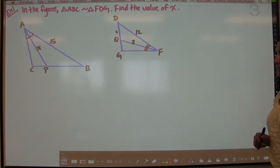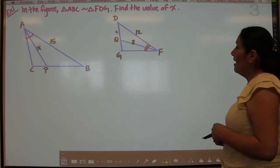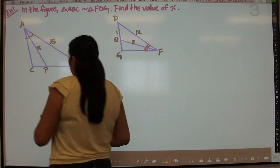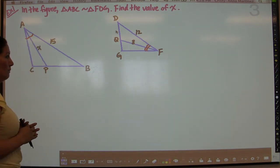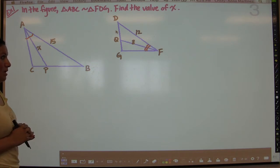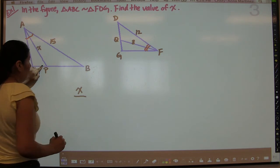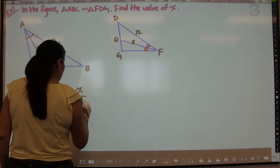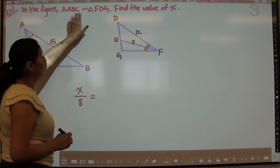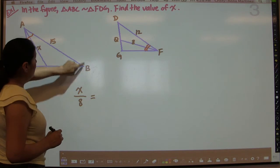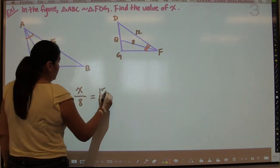Now we're going to apply those theorems. In the figure, triangle ABC is similar to triangle FDG, and we want to find the value of X. These two angles are marked congruent and these two are marked congruent, so we use the theorem that angle bisectors are proportional to corresponding sides. The angle bisector in the first triangle is X and in the second is 8, giving us X to 8. From ABC similar to FDG, side AB corresponds to side FD, which is 12, so we get 15 to 12.